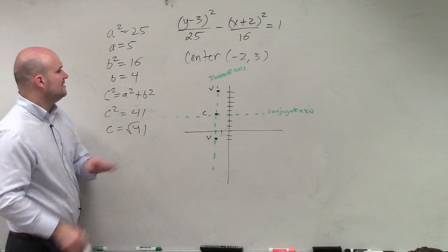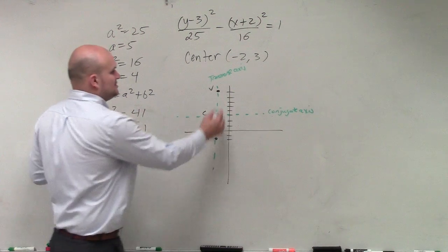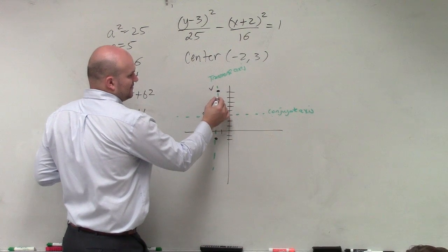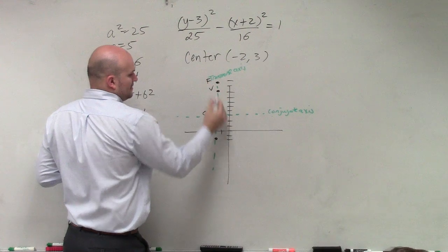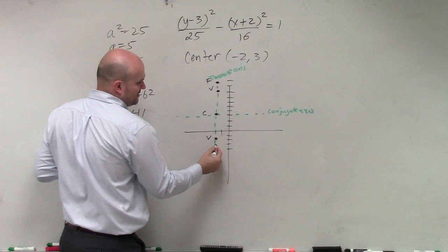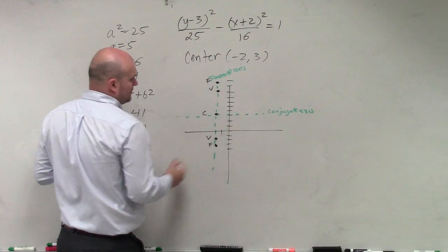Next, find the foci, which is between 6 and 7. So one, two, three, four, five, six, seven - that's my focus. And five, six, seven - that's my focus there.